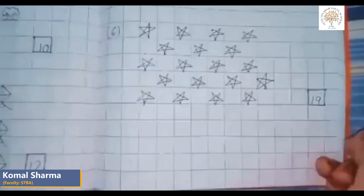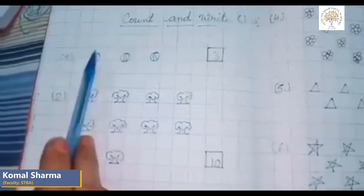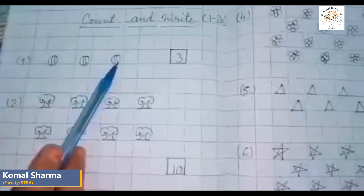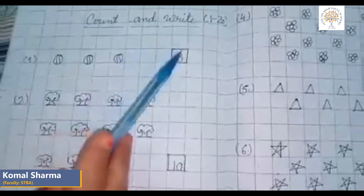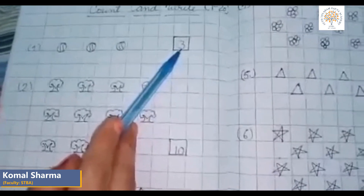Okay, let's repeat it again. How many balls are there? One, two, three. There are three balls. We write three here.